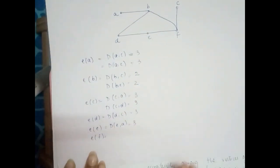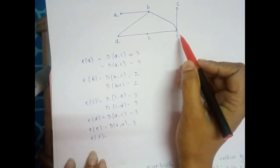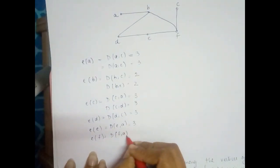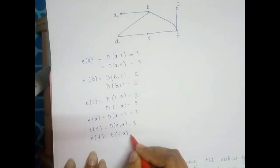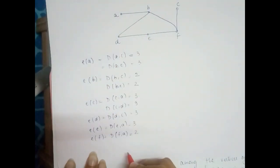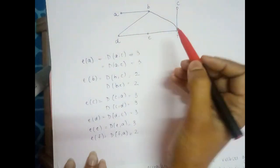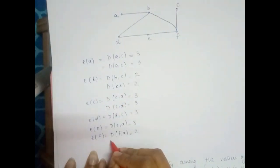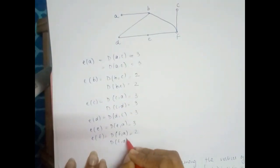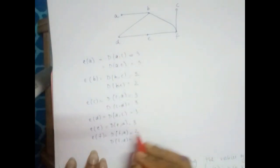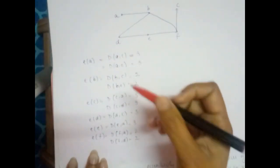For eccentricity of vertex f, we check the farthest vertex — for example a. Distance f to a: f to b, b to a gives 2 edges. Also checking d: f to e, e to d gives 2 edges. No vertex is farther than 2 edges from f, so the eccentricity of f is 2.